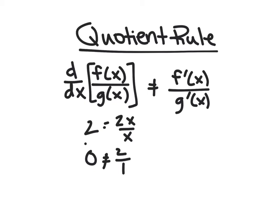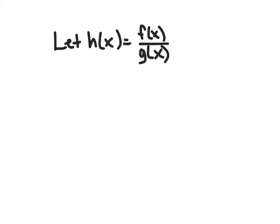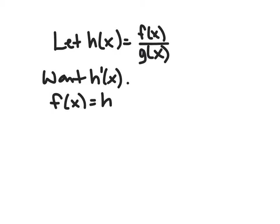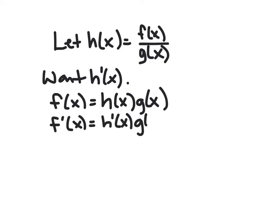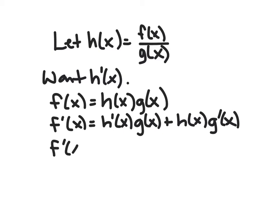We can actually prove the quotient rule from the product rule. Let h(x) = f(x)/g(x) and we want to find h'(x). We can write f(x) = h(x)·g(x) by multiplying over the denominator, and then apply the product rule. We already know this derivative: f'(x) = h'(x)·g(x) + h(x)·g'(x). We want to isolate h'(x), so we subtract h(x)·g'(x) from both sides, giving f'(x) − h(x)·g'(x) = h'(x)·g(x).